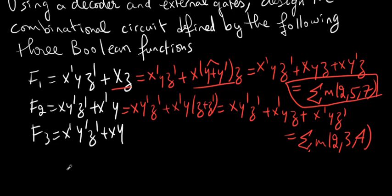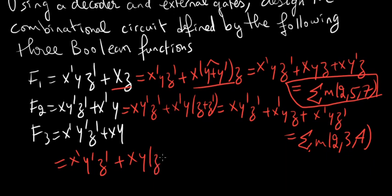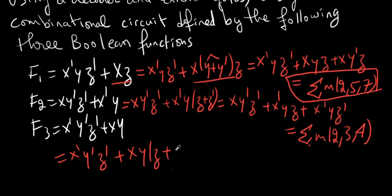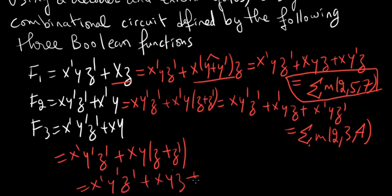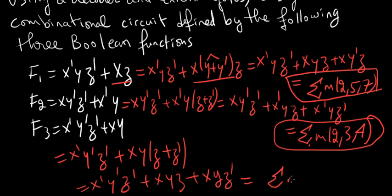For F3 we get X̄ȲZ̄ plus XYZ plus Z̄. Expanding, that gives us X̄ȲZ̄ plus XYZ plus XYZ̄, with minterms 0, 6, and 7.